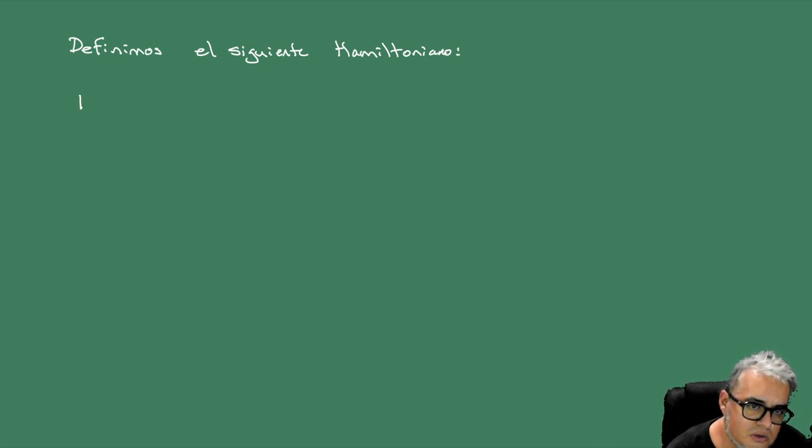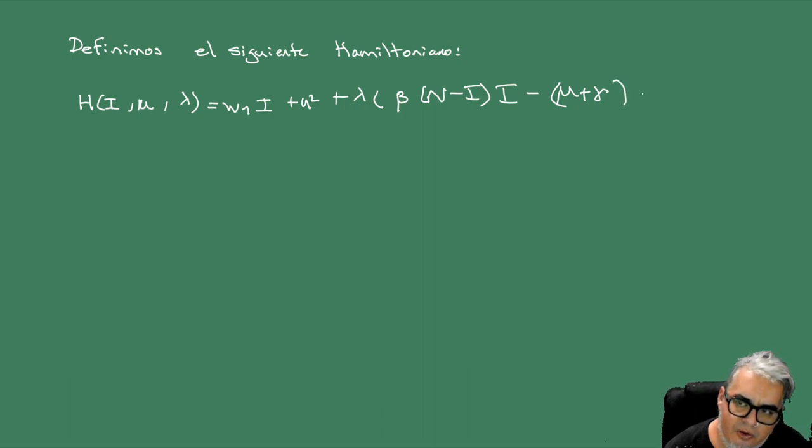Entonces vamos a ver. Entonces definimos el siguiente hamiltoniano. Esto es H que depende de I, depende de U y depende de lambda. Esto es igual a W1 por I más U cuadrada, más lambda por beta N menos I todo por I, menos mu más gamma por I, menos U por I.